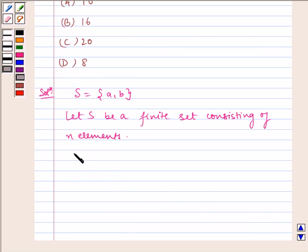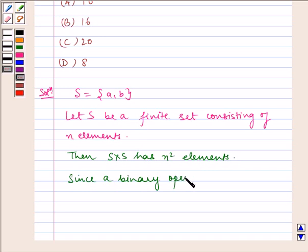Then S cross S has n squared elements. Since a binary operation on S is a function from S cross S to S,